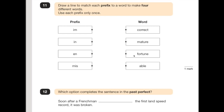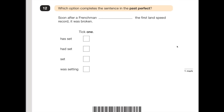Number 11 is testing your knowledge of prefixes and spelling — match the prefixes to the correct word. 'Im' goes with 'immature', 'in' with 'incorrect' — it's the opposite of correct — 'en' with 'enable', and 'mis' with 'misfortune'. Number 12: which option completes the sentence in the past perfect? The past perfect always has 'had' in it, because it was in the past tense. There's only one answer with 'had' — it's 'had set'. 'Soon after a Frenchman had set the first land speed record, it was broken' — that sounds correct.